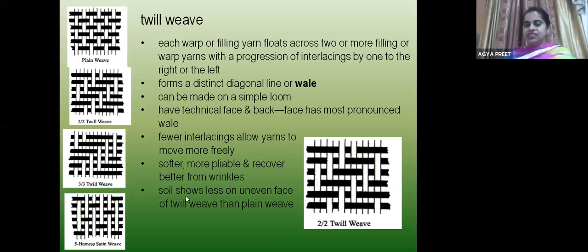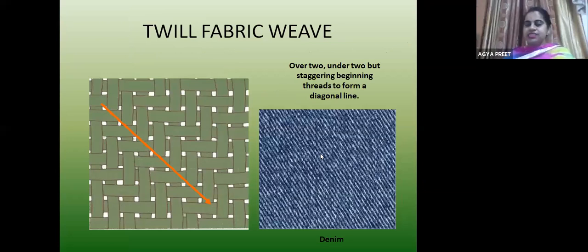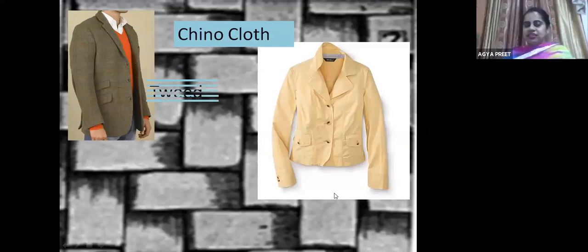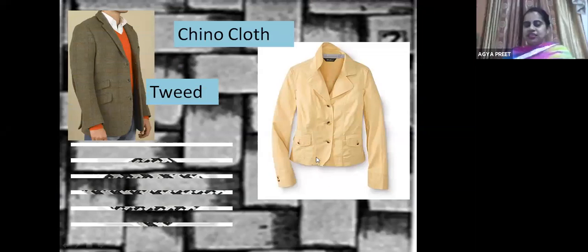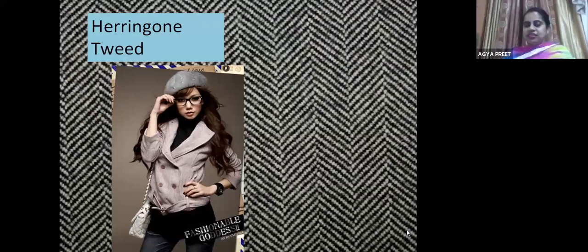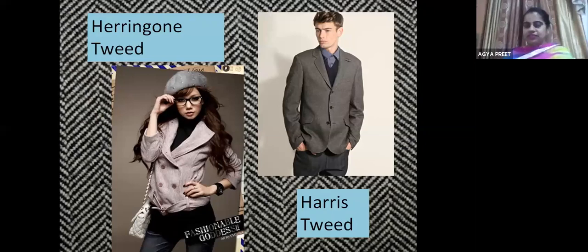Fabrics in twill weave include chino, denim, tweed, tartan and houndstooth check — mostly used for jackets. Herringbone tweed and Harris tweed are examples. Nowadays tartan is used for making single-piece gowns.